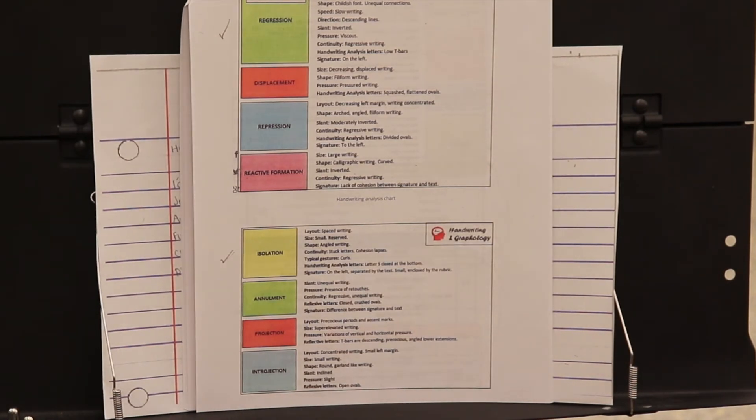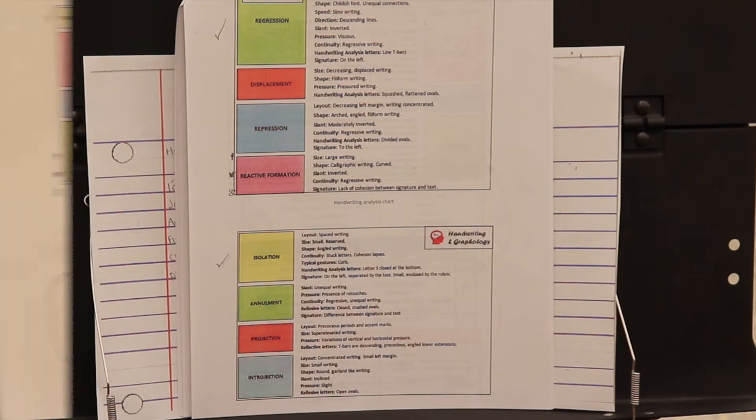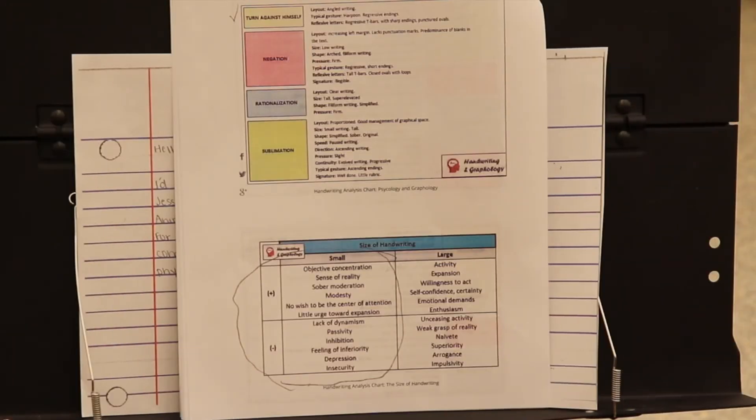She shows regression and isolation. I'm looking at the layout, size, shape, continuity, some typical gestures, handwriting analysis of the letters we looked at already, and then the signature. She also has the feature of turning itself.